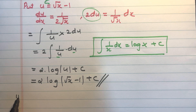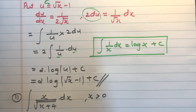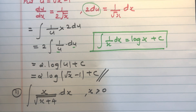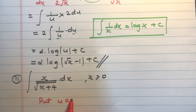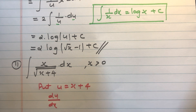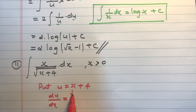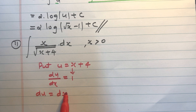Question number 11. Integral of x divided by root(x plus 4) into dx, where x is greater than 0. Using integration by substitution, put u equal to x plus 4. Then du/dx equals 1, since the derivative of x is 1 and derivative of 4 is 0. So du equals dx.